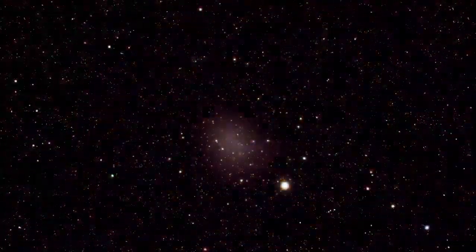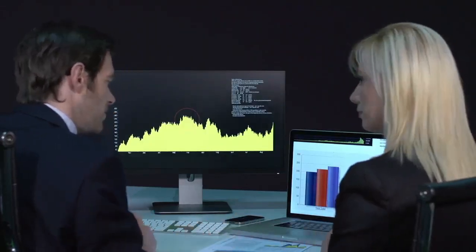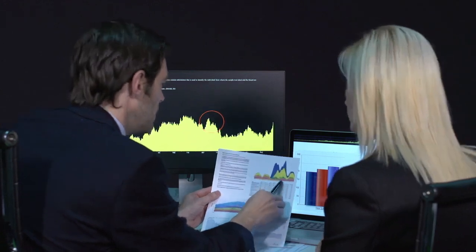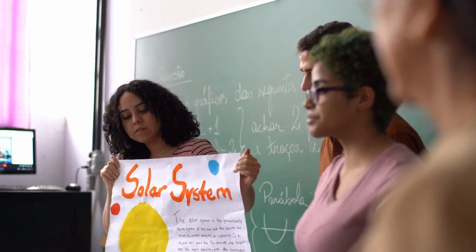Proxima Centauri b, also known as Proxima b, is an exoplanet that has captivated scientists and space enthusiasts alike. Discovered in 2016, it orbits Proxima Centauri, a red dwarf star located just 4.2 light-years away from Earth.